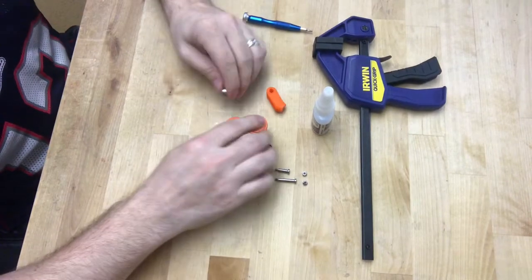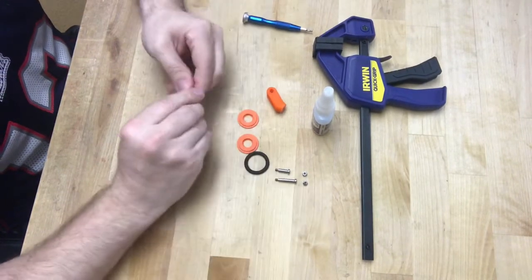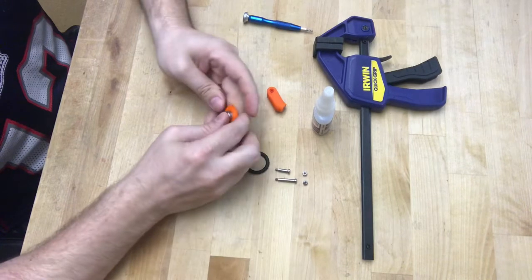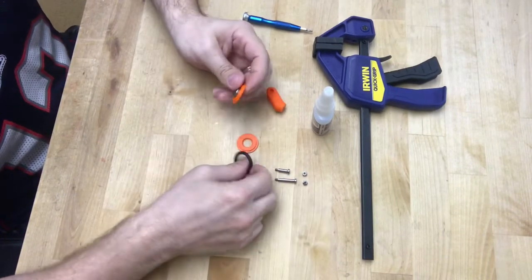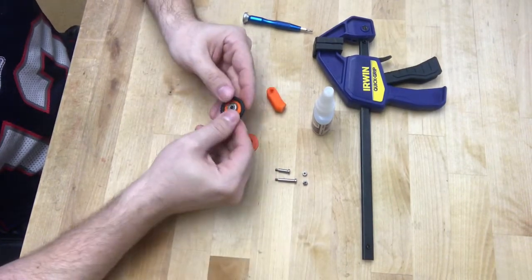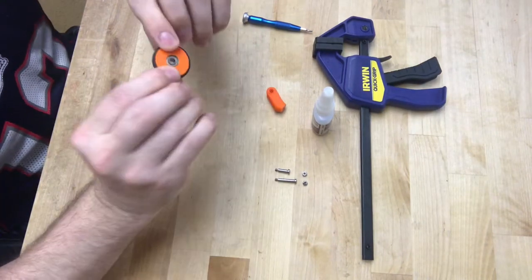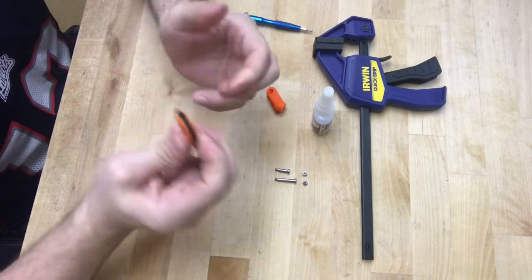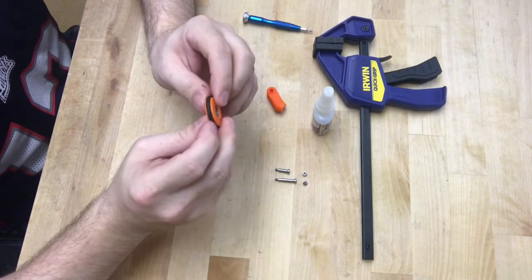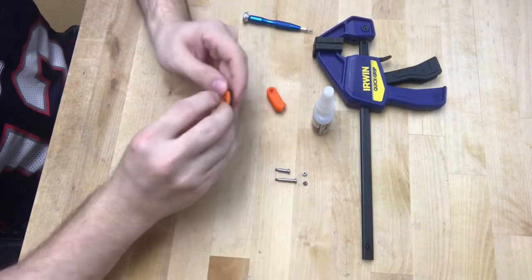So to get started, what we're going to simply do is, just like we did before, we're going to put our bearing in, we're going to take our wheel, put it over it, and then sandwich it in between the second one. The step that we didn't do is add the CA glue, and I want to do that next, so that way you can see it here.